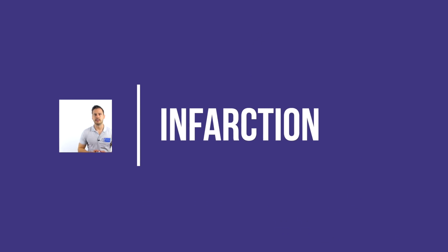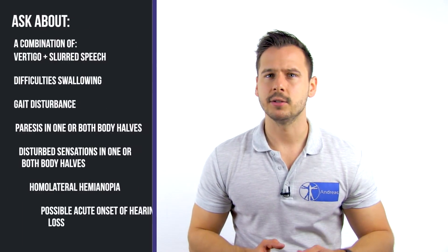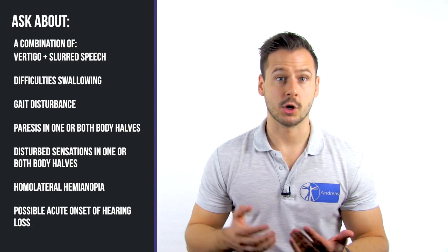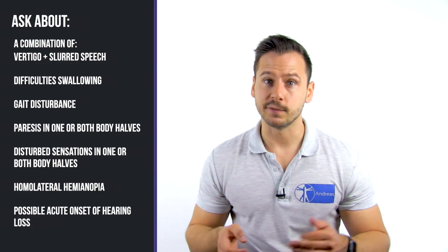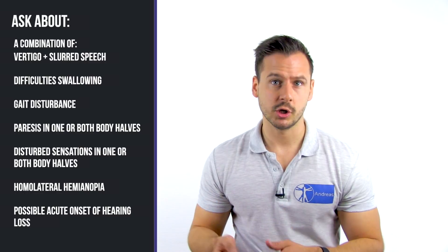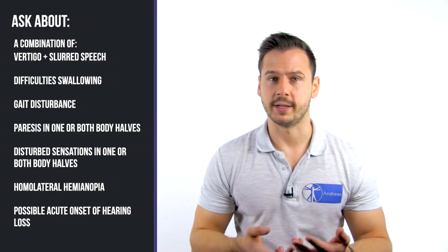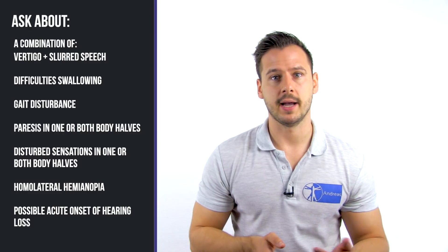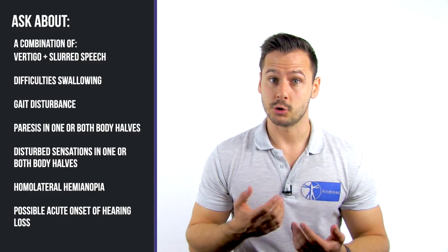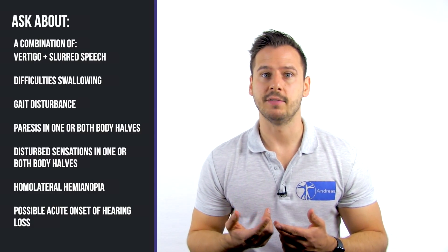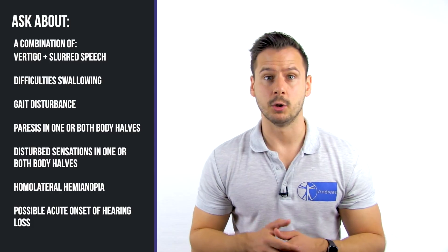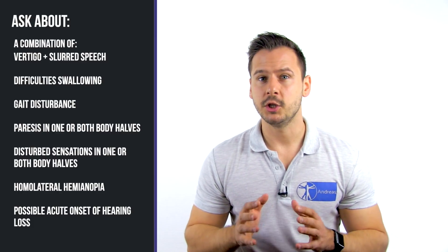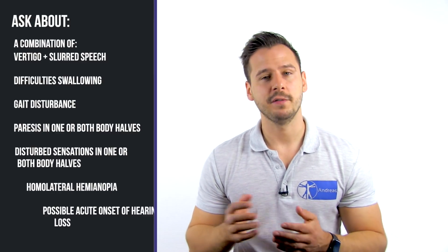In these cases, dizziness occurs suddenly and in combination with neurological symptoms such as a combination of vertigo with slurred speech, difficulty swallowing or gait disturbance, paresis in one or both body halves, disturbed sensations in one or both body halves, or homolateral hemianopia. Furthermore, there may be acute onset of hearing loss.